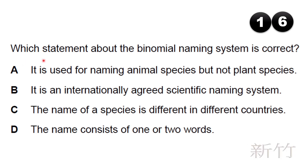Which statement about the binomial naming system is correct? Options: A) it is used for naming animal species but not plant species; B) it is an internationally accepted scientific naming system; C) the name of a species is different in different countries; D) the name consists of one or two words. The answer is B: it is an internationally accepted scientific naming system.